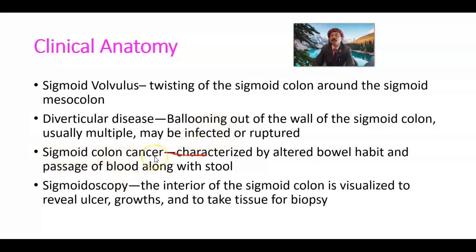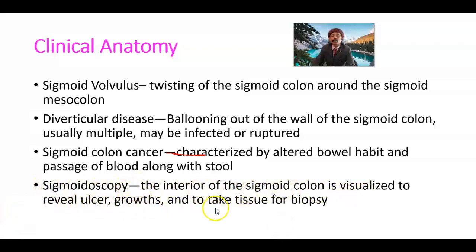Sigmoid colon cancer, like other colon cancers, is characterized by altered bowel habit and passage of blood along the stool — we call it hematochezia. Sigmoidoscopy is a procedure to look inside the sigmoid colon; the interior is visualized to reveal ulcers or growth and to take tissue for biopsy. Tissue from the sigmoid colon or rectum may be taken to diagnose cancer, growth, ulcer, or any other pathology.